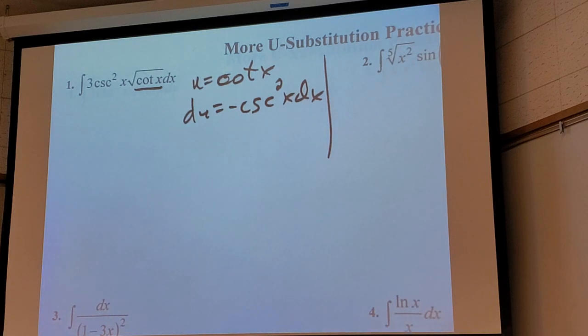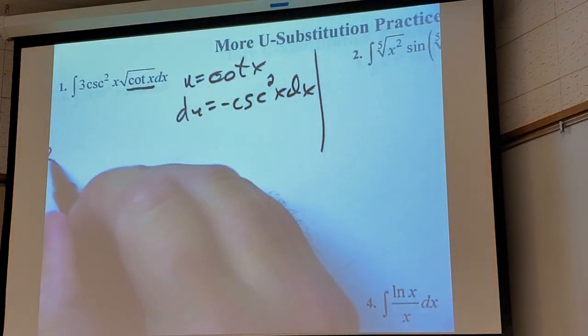If u equals cotangent, what is du? Negative cosecant squared. Where? Then you can identify. Well, in this case I have too much, don't I? Don't I have a 3 in there I don't need? Can't I just take that out? And at the same time, what do I really need there? What does du need that's not there now? Negative. So I'm going to take a 3 out and at the same time I can multiply it by a negative.